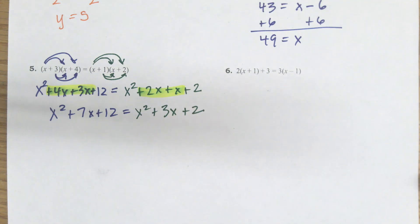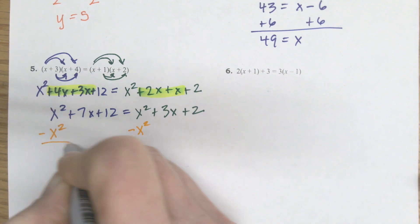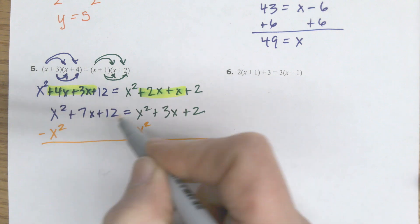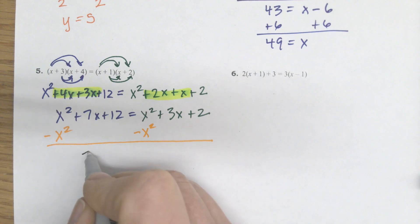Okay, so now I'll start getting rid of that x squared thing. So I'm going to go ahead and remove the x squared on both sides. And when I do that, it actually cancels out on both sides of the equation, eliminates that, leaving me with 7x plus 12 equals 3x plus 2.